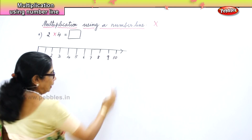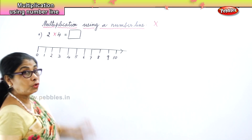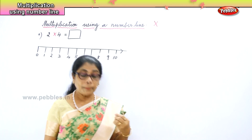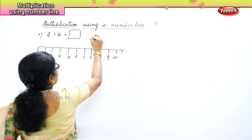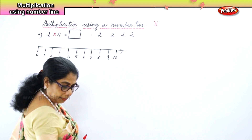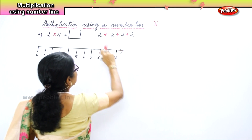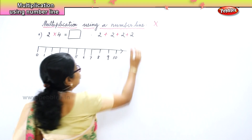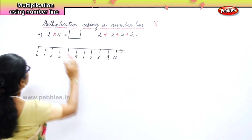We've got the sum: two, four times. That is two plus two plus two plus two. How many times two? One, two, three, four times. Now let's do it on the number line. How many times two? Four times.